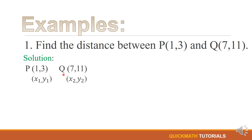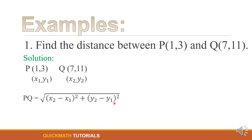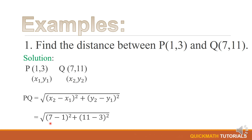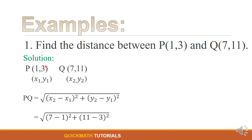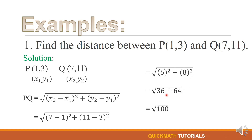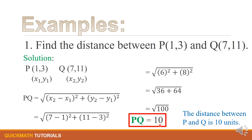Or you can have point Q as your first point and point P as your second point. Now, using the distance formula, we will substitute the values of x sub 1, y sub 1, x sub 2, and y sub 2. We have x sub 2 is equal to 7, x sub 1 is 1, y sub 2 is 11, and y sub 1 is 3. 7 minus 1 is 6, and 11 minus 3 is 8. 6 squared is 36, 8 squared is 64. 36 plus 64 is 100, and the square root of 100 is 10. Therefore, the distance between P and Q is 10 units.